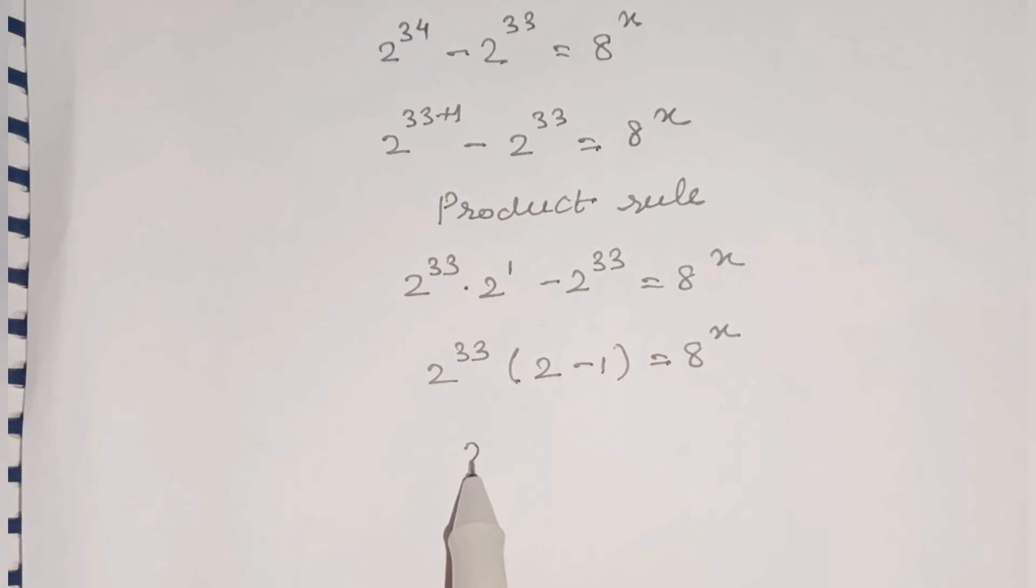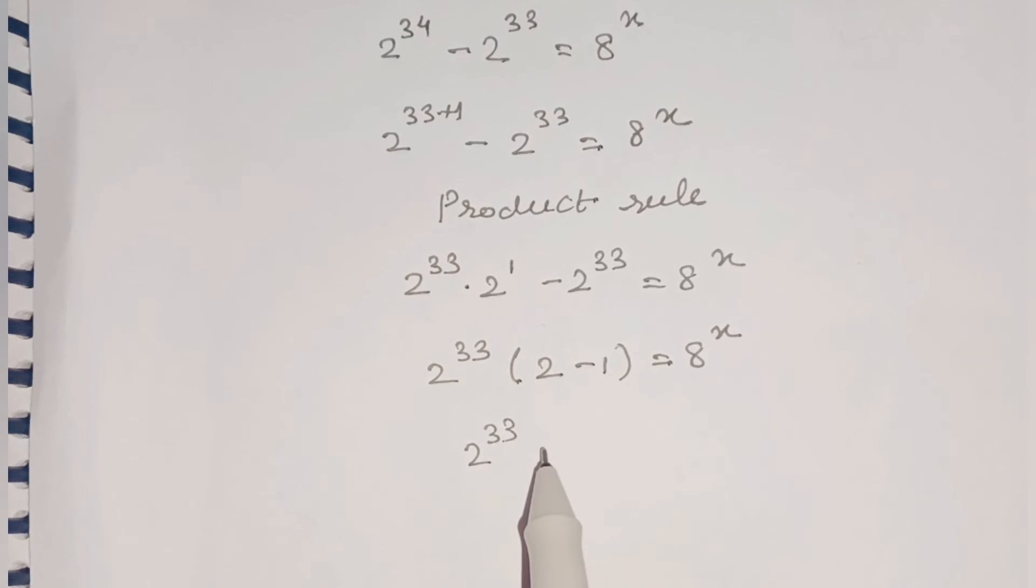Now 2 minus 1 is 1, so we'll write 2 raised to 33 into 1 is 2 raised to 33 only, is equal to 8 raised to x.